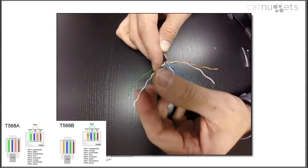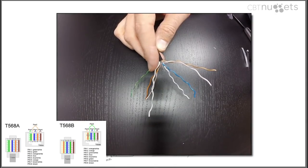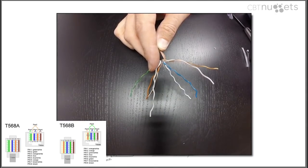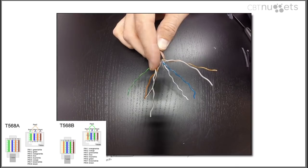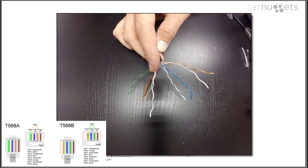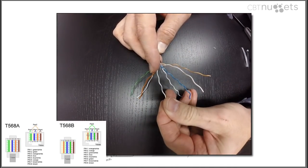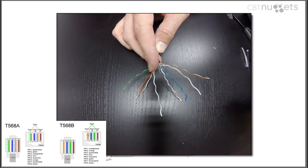Now I'm going to arrange these wires in whatever standard I'm trying to match, T568A and T568B. If you punched in the patch panel as T568A, then arrange these in T568A. If you made them B, make them B.